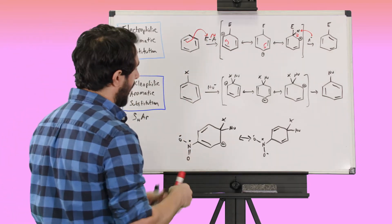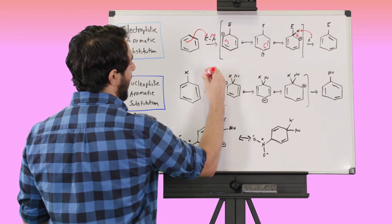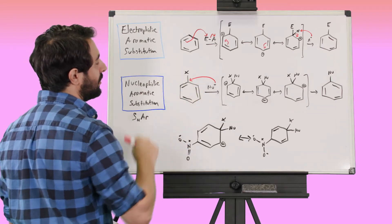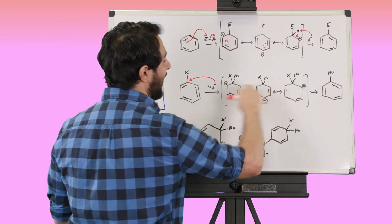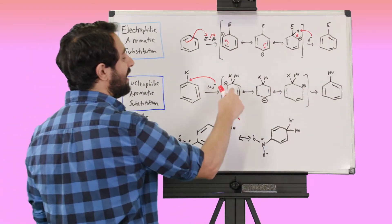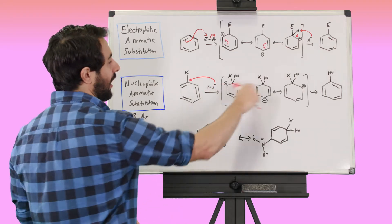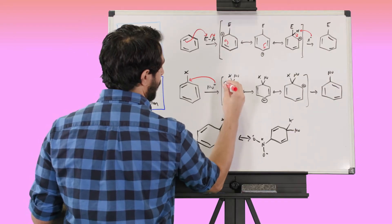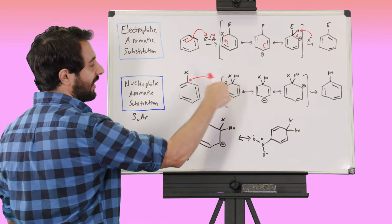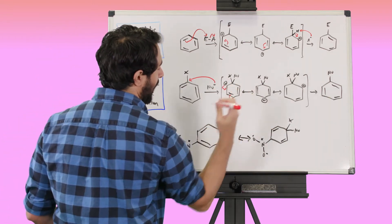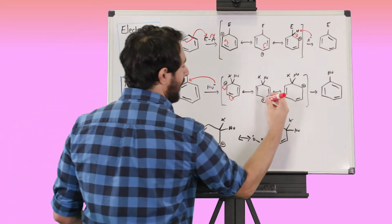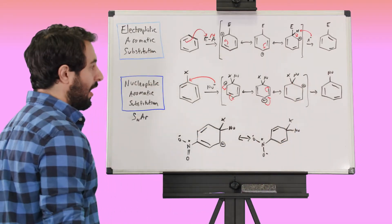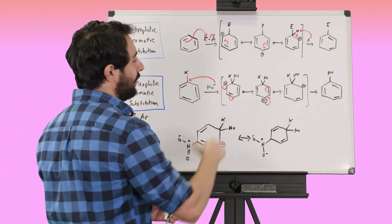A nucleophile is going to attack instead of benzene attacking an electrophile. The C–X bond is polarized because of the halogen, making that carbon the most partially positive site. The intermediate now has a negative charge on each resonance structure, instead of a positive charge as in EAS. The negative charge can move around the ring through resonance.